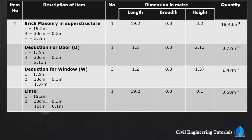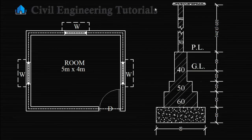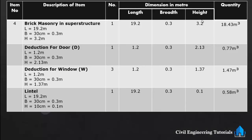Deduction for lintel slab: the lintel runs along the total center line length of 19.2 meter. Width = 0.3 meter (same as wall width), height (lintel thickness) = 0.1 meter. Total quantity = 19.2 × 0.3 × 0.1 = 0.58 cubic meter.